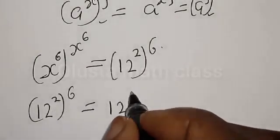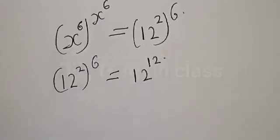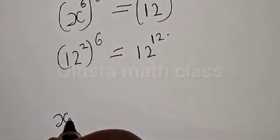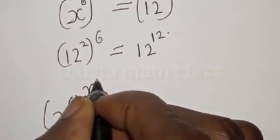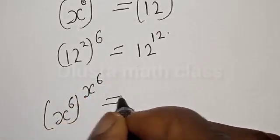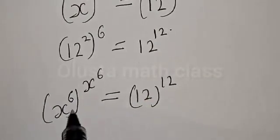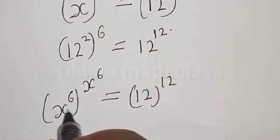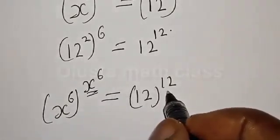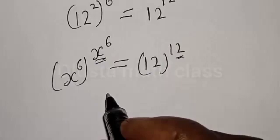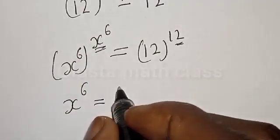Looking at this expression and comparing both sides, we have x raised to power 6 on the left and 12 on the right, and similarly x raised to power 6 here corresponds to the power of 12 on the right. Therefore, x raised to power 6 is equal to 12.